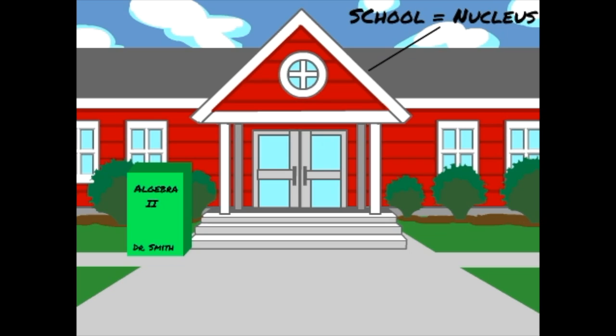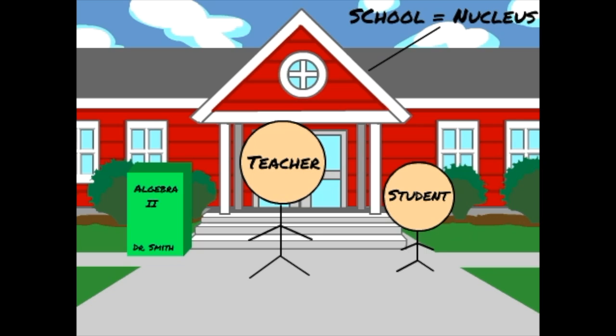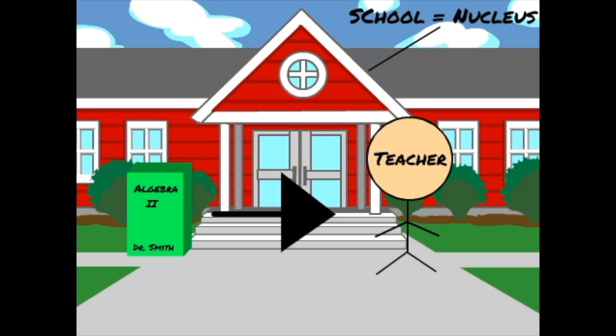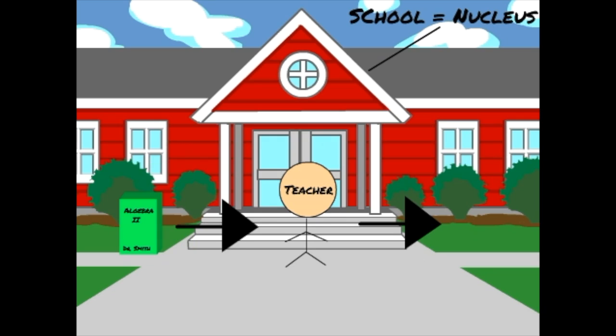Imagine it this way. The nucleus of the cell is a school. Inside the school are textbooks, teachers, and students. The textbooks represent the DNA; they contain all the raw information. The teachers represent the RNA; they take the information from the textbook and relay it to the students, which represent the ribosomes.